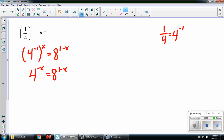So the common base between 4 and 8 is going to be 2. Because 2 squared gives me 4, and 2 cubed gives me 8. So I'm going to rewrite 4 as 2 squared. That negative x is still there. And I'm going to write 8 as 2 cubed with the 1 minus x still there.